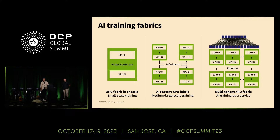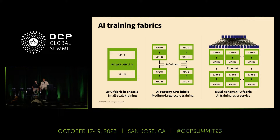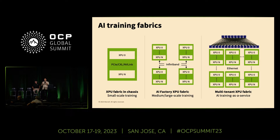Before we go into the solution of what we are proposing, we wanted to set a base of the different AI models we have and different network architectures required. There were typically old generation ones where we had small AI trainings which could have been accommodated in just a single chassis with all the CPUs and XPUs required with all the PCI links. Then we have the next generation where our models expanded and we needed bigger clusters, going into medium and large AI training fabrics with dedicated AI fabrics.